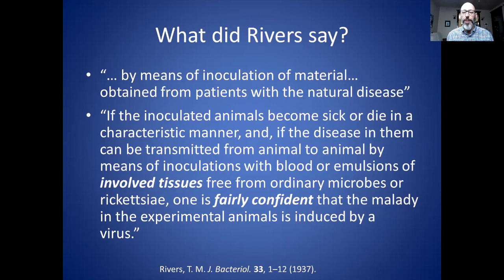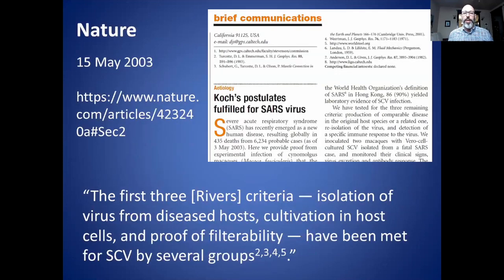So even when applying his criteria, it's not certain — you can only be fairly confident that the virus causes that disease. That is not very inspiring of confidence. Even if all six criteria are satisfied, that only leads to being fairly confident, not conclusive, not certain, not 100%. Now, back to the Nature article: it states that the first three Rivers criteria — isolation of the virus from a diseased host, cultivation in host cells, and proof of filterability — have been met for the SARS coronavirus by several groups.